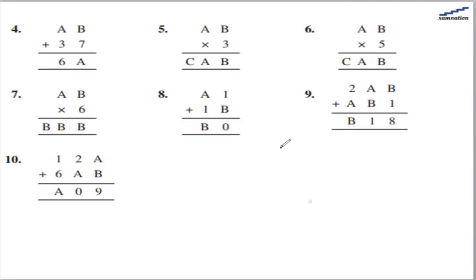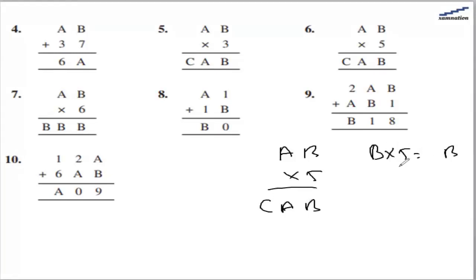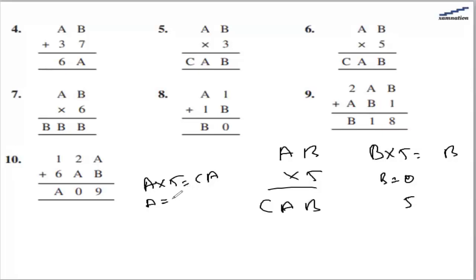For question 6, ab multiplied by 5 gives cab. So b multiplied by 5 gives b — this is possible only if b is 0 or 5. Also, a multiplied by 5 gives ca, which is possible if a is 5, since 5 multiplied by 5 gives 25. So a will be 5 and b will be 0.